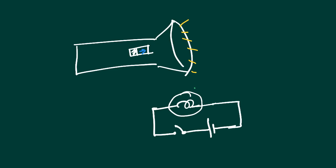Let's take an example — a torch. We have a bulb, a switch, and a battery. This battery is also called a cell. Now let's close the switch. This circuit is completed.